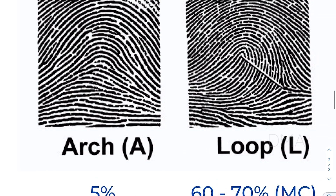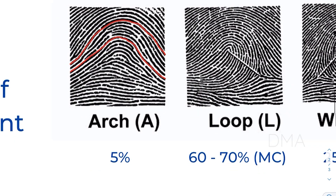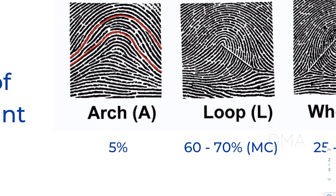let's learn to identify it. The ridge of this fingerprint pattern starts from one end and ends on the other end. Every ridge in this pattern starts from one end and ends on the other end. This arch pattern can be seen in roughly five percent of the population, making it the rarest fingerprint pattern in human beings.